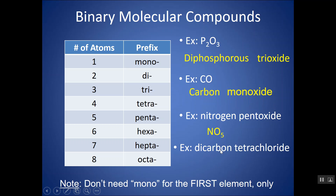Lastly, dicarbon tetrachloride: carbon has a subscript of 2, and chlorine has a subscript of 4, giving C2Cl4. Notice I don't simplify this. For ionic compounds you write the formula unit, the simplest ratio of elements. But these are molecular compounds representing actual molecules that exist, so I don't simplify the subscripts. There are actually 2 carbons and 4 chlorines, whereas in an ionic compound like NaCl, there are millions of Na ions and millions of Cl ions, and we just represent the simplest ratio.